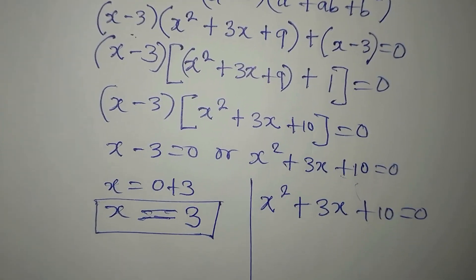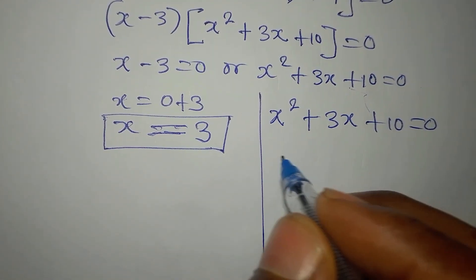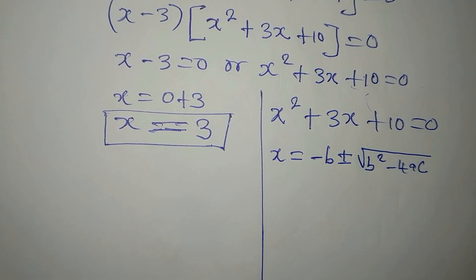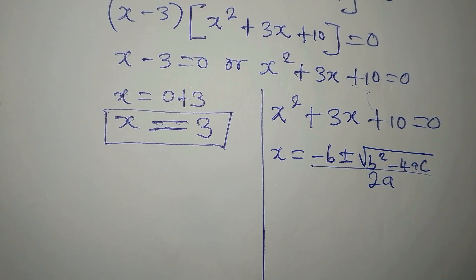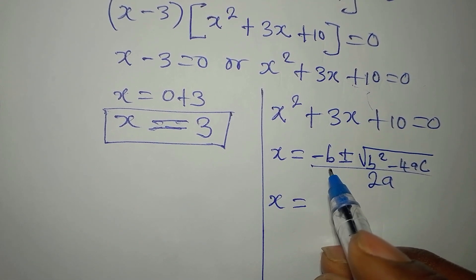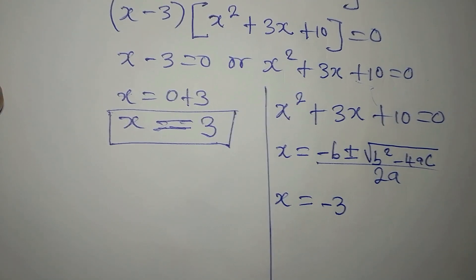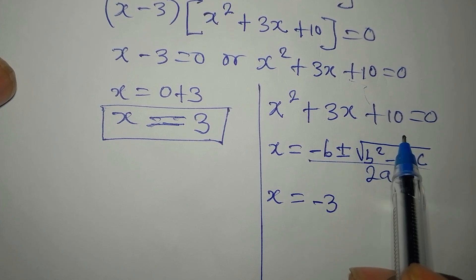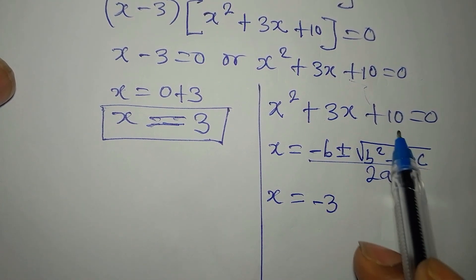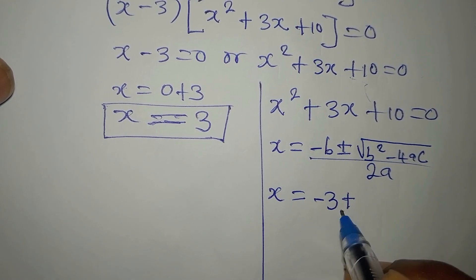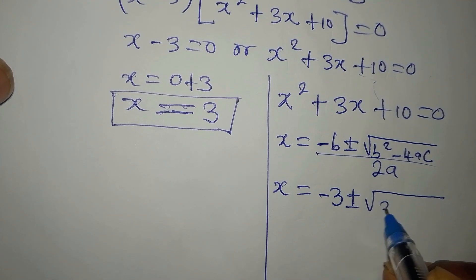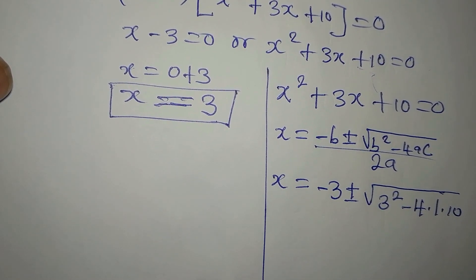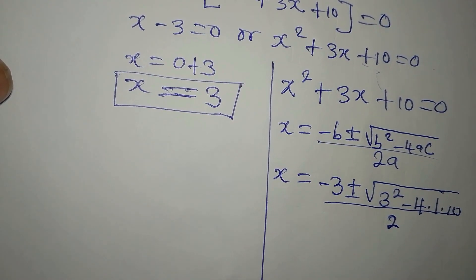The quadratic formula is x = (-b ± √(b² - 4ac)) / 2a. Here a = 1 (coefficient of x²), b = 3 (coefficient of x), and c = 10 (the constant). So x = (-3 ± √(3² - 4·1·10)) / (2·1), which simplifies to (-3 ± √(9 - 40)) / 2.